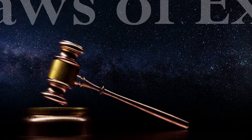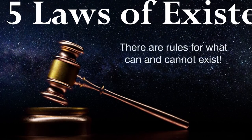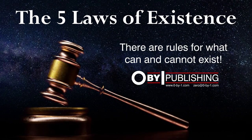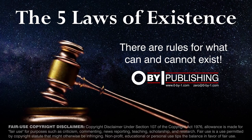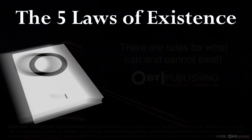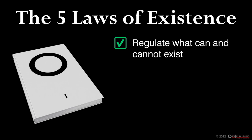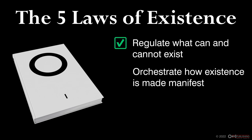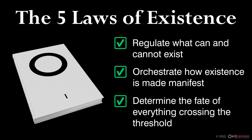Hello, and welcome back to the fourth video in our 0x1 Publishing video series. In this video, we break down the five laws of existence referenced in the first chapter of the book titled Zero. These five fundamental laws regulate what can or cannot exist, orchestrate how existence is made manifest, and determine the fate of everything that crosses the threshold. Before we break down these five fundamental laws, let's establish how laws exist in the first place and how they come to be.